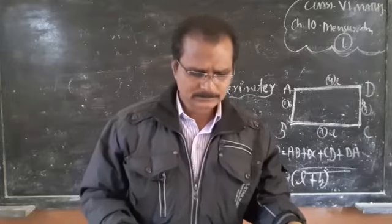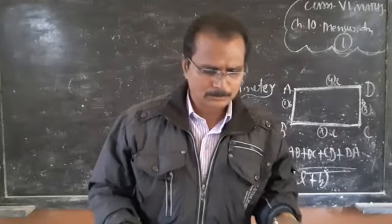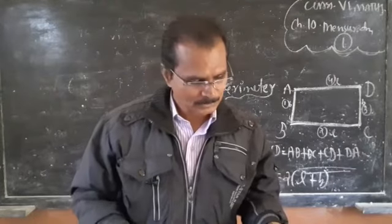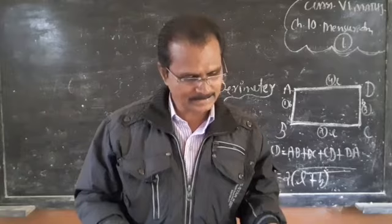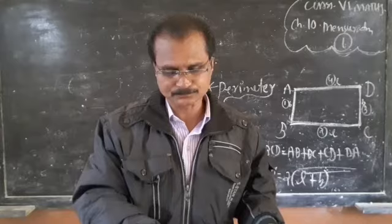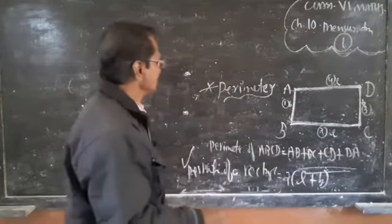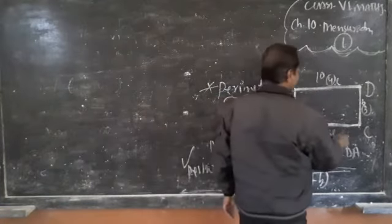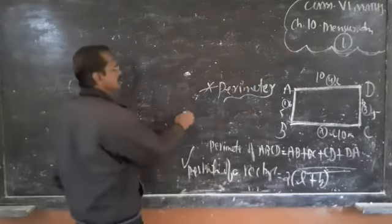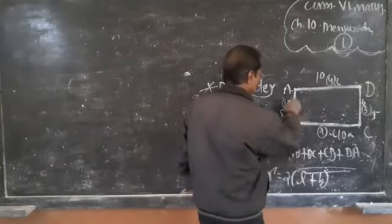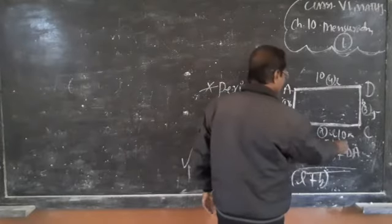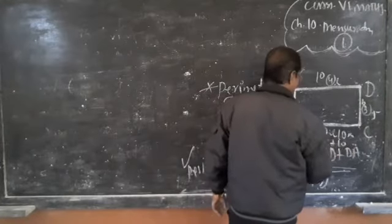We will take one example. Find the perimeter of the following rectangle: this side is 10 cm, this side is 10 cm, this side is 5 cm, and this side is 5 cm. So perimeter equals 5 + 10 + 5 + 10, which gives us 10, 20, 30 — that is 30 cm.